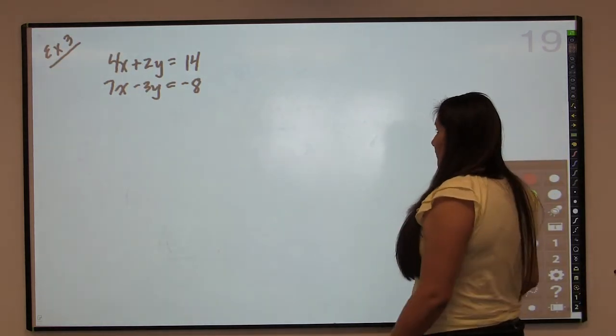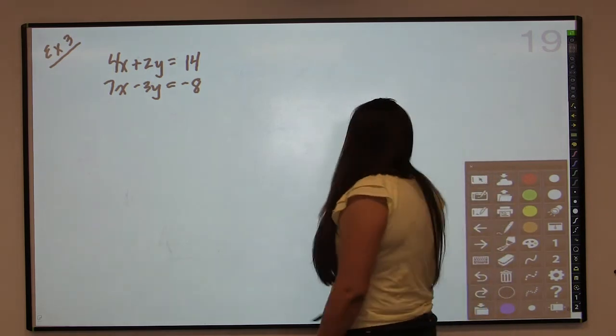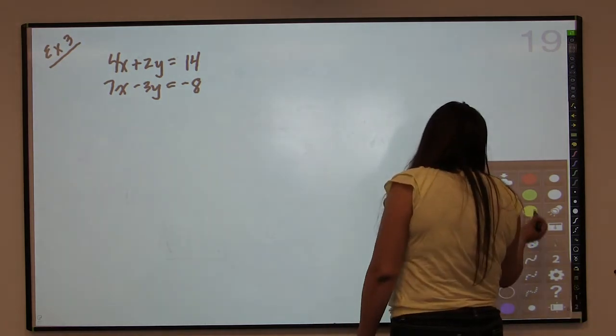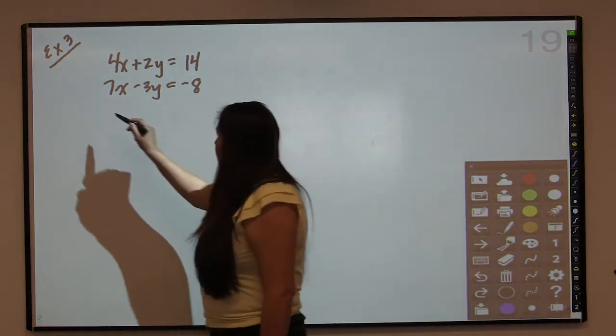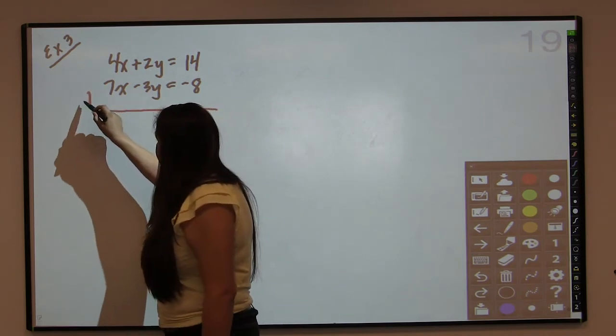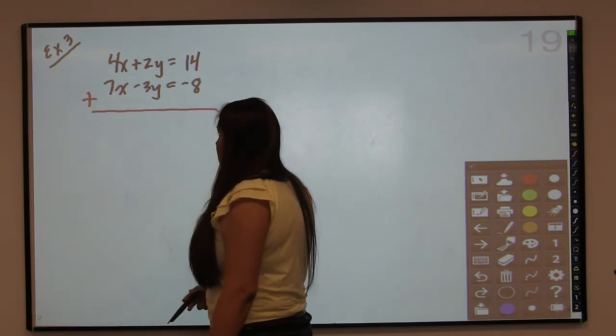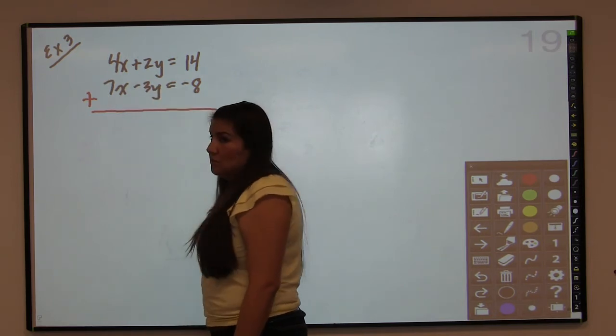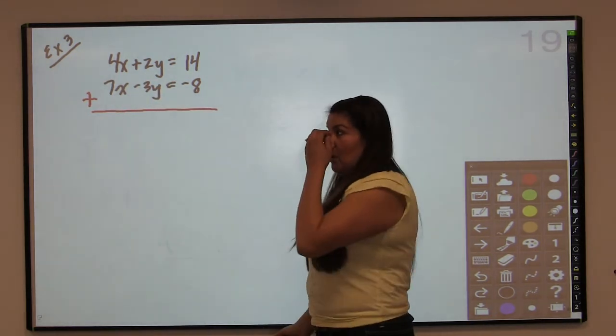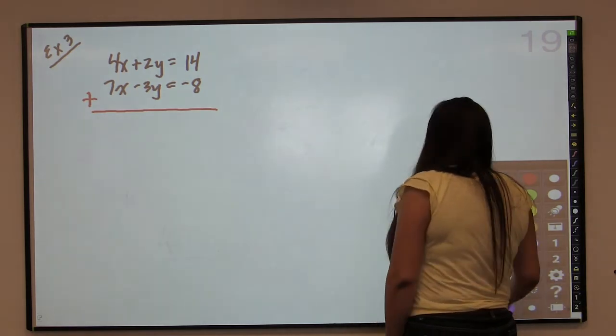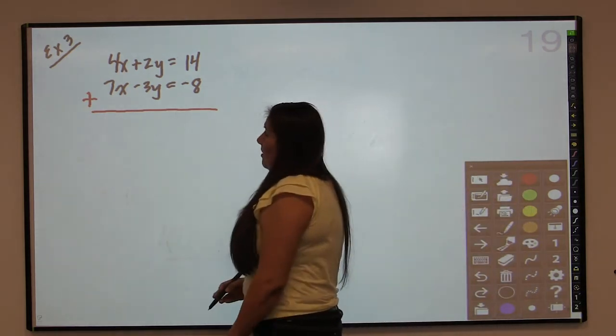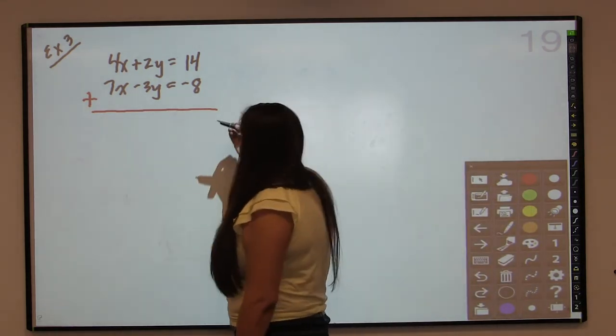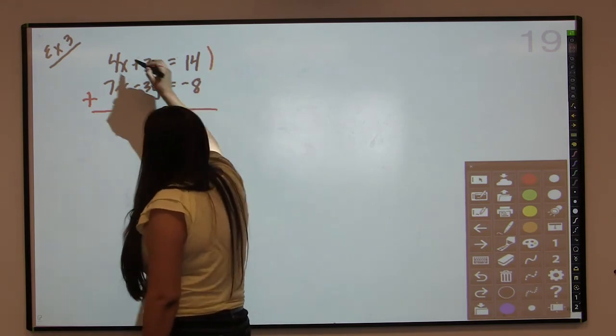And this one is the most difficult of them because no matter what you do, you are going to have to multiply both equations by something. When I try to add them the way they are, nothing is going to cancel. 7 and 4 won't cancel. Negative 3 and positive 2 won't cancel. Multiplying one equation won't help either. But I will say that there is still an easier way.